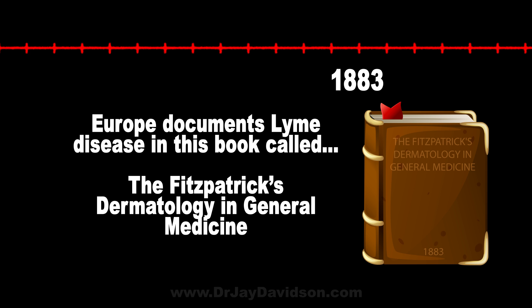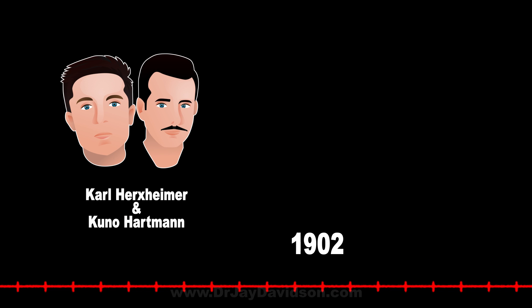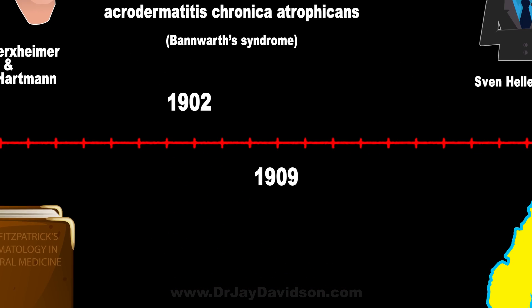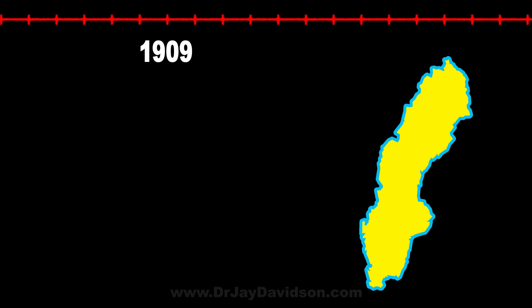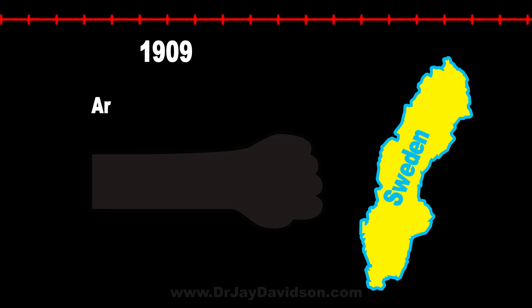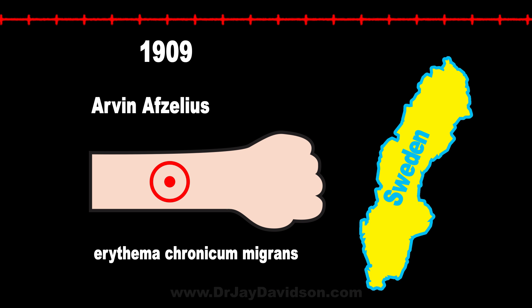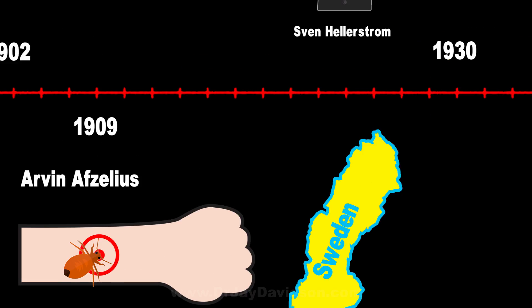It was called Eurythema Chronicum Migrans. In 1902, Carl Herxheimer and Kuno Hartman called it ACA — Acrodermatitis Chronicum Trophicans, or Bandworth Syndrome. In 1909, in Sweden, Arvin noted a migrating rash he called Eurythema Chronicum Migrans, which was later shortened to EM, or Eurythema Migrans, and suggested it came from a tick bite.